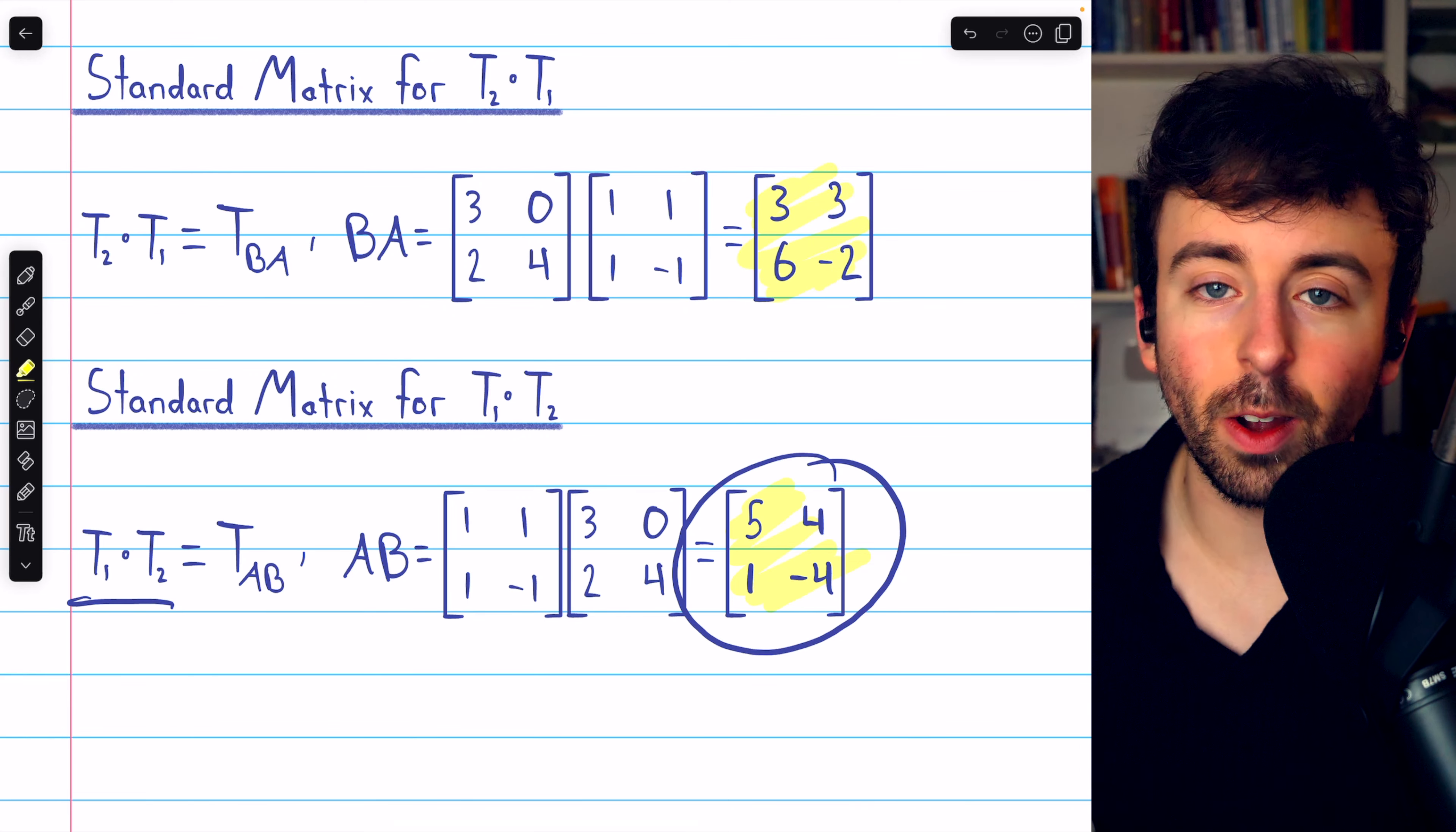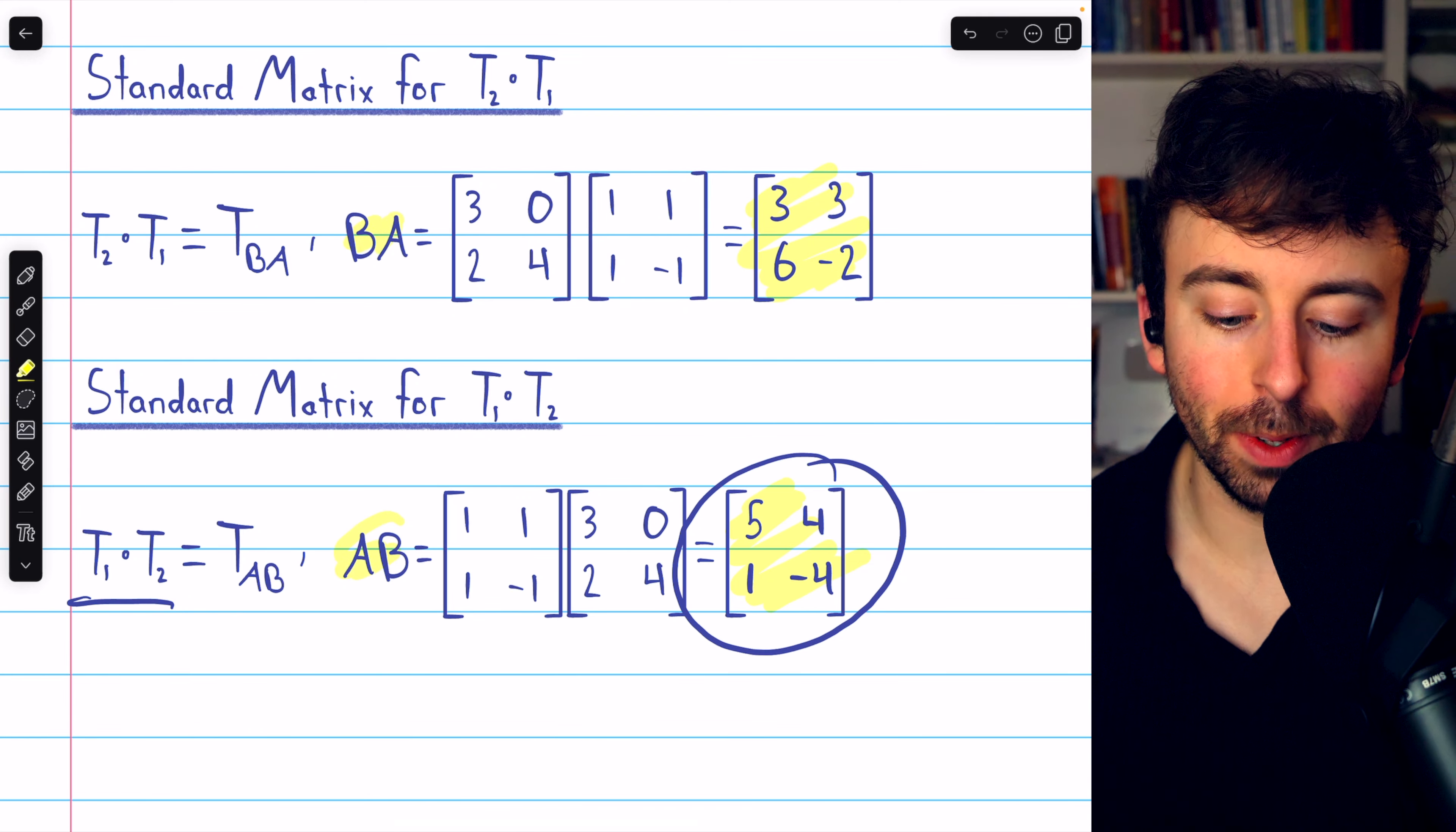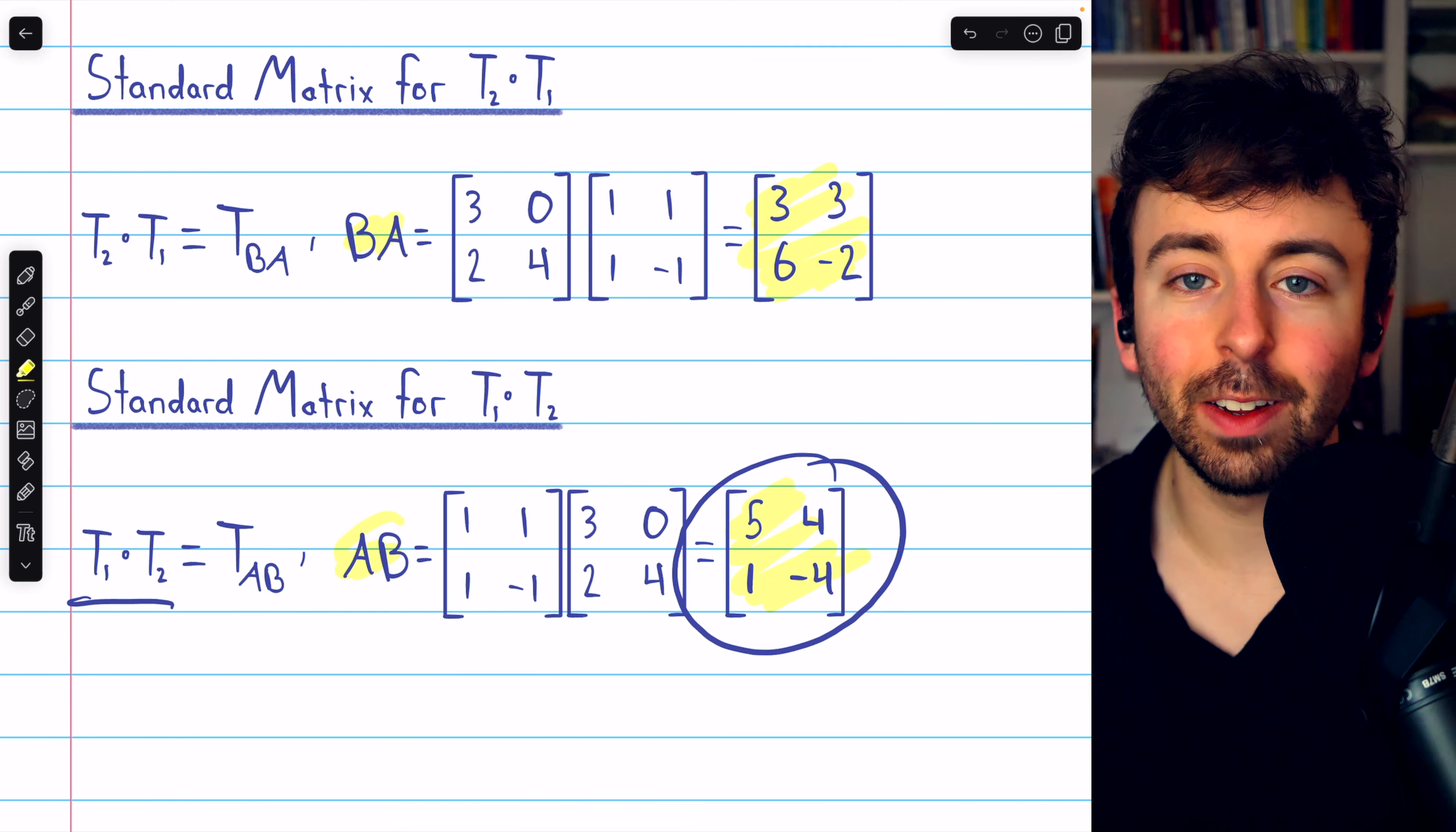We may notice that it is different from the standard matrix for T2 circle T1. So the matrices A and B definitely don't commute because if they did, then these standard matrices would be the same.